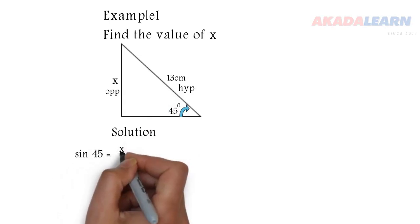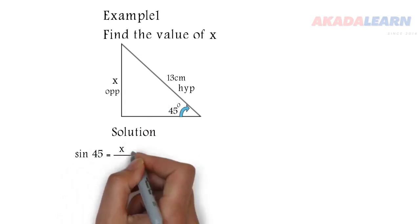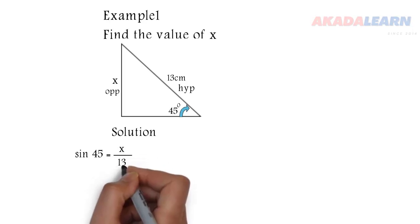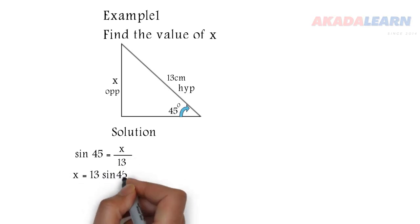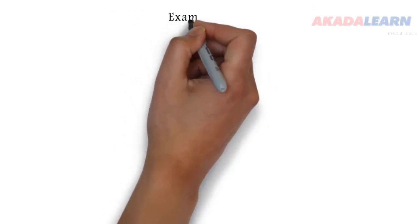So sine 45 is opposite over hypotenuse, which is x over 13. We cross multiply, so x is 13 times sine 45. The value of sine 45 can be gotten from your four-figure table or use your calculator. So multiply together, x is 9.19 centimeter.